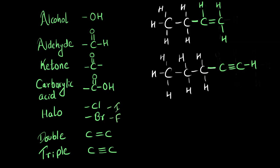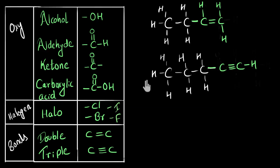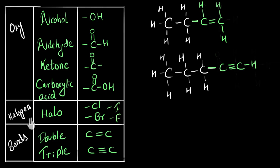So we've seen a lot of functional groups, and these are the broad categories. One is the oxygen-containing functional groups, which includes alcohol, aldehyde, ketone, and carboxylic acid. The other is the halogen-containing functional groups, which include chlorine, bromine, iodine, and fluorine. And the third category is bonds — double bonds and triple bonds. These are also functional groups.